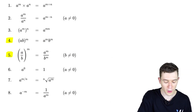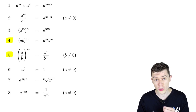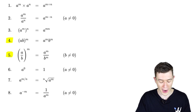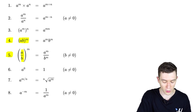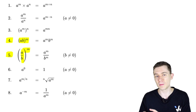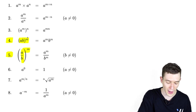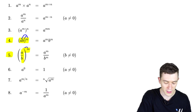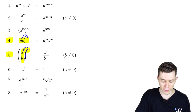Number four and number five are quite similar. When we have a product of bases or a quotient of bases all raised to a power — so ab all to the m, or a over b to the m — the exponent gets distributed. We have to apply this m power to both bases, a and b.